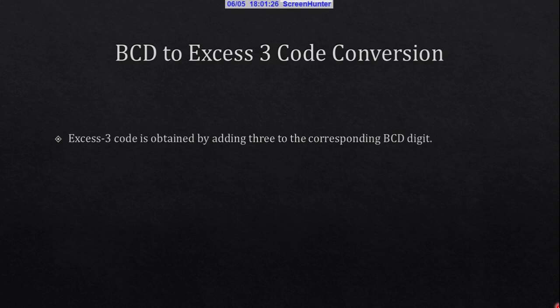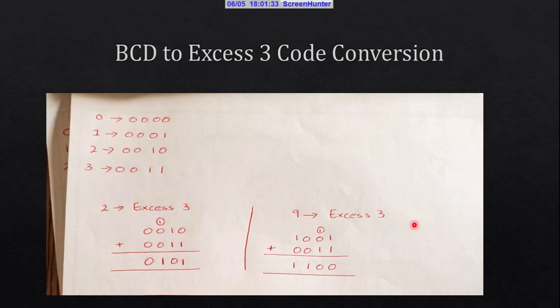XS3 code is obtained by adding 3 to the corresponding BCD digit. For example, the BCD code of 2 is 0010. If we add 3 to it, we get 0101. We can say this is the XS3 code of 2.